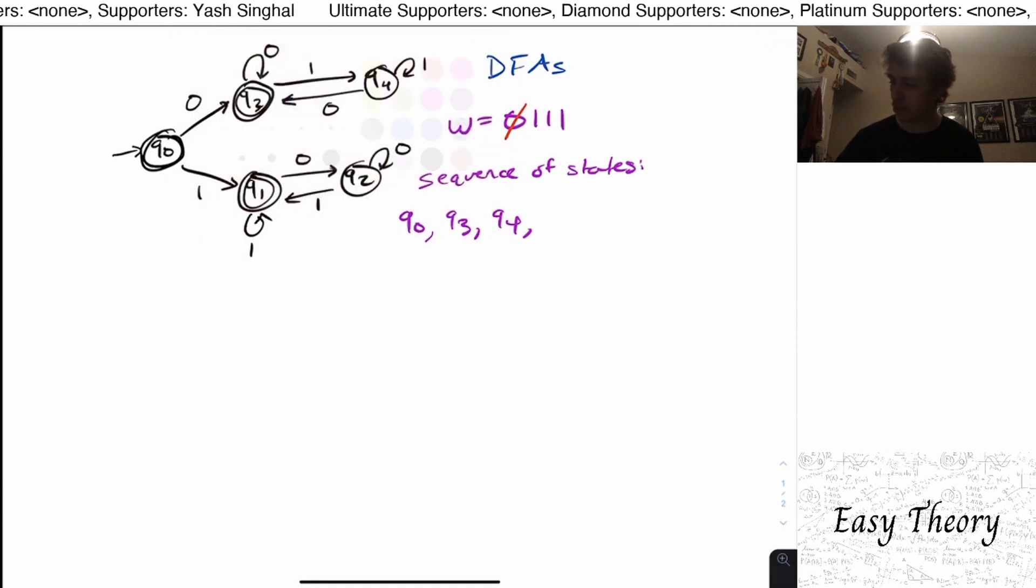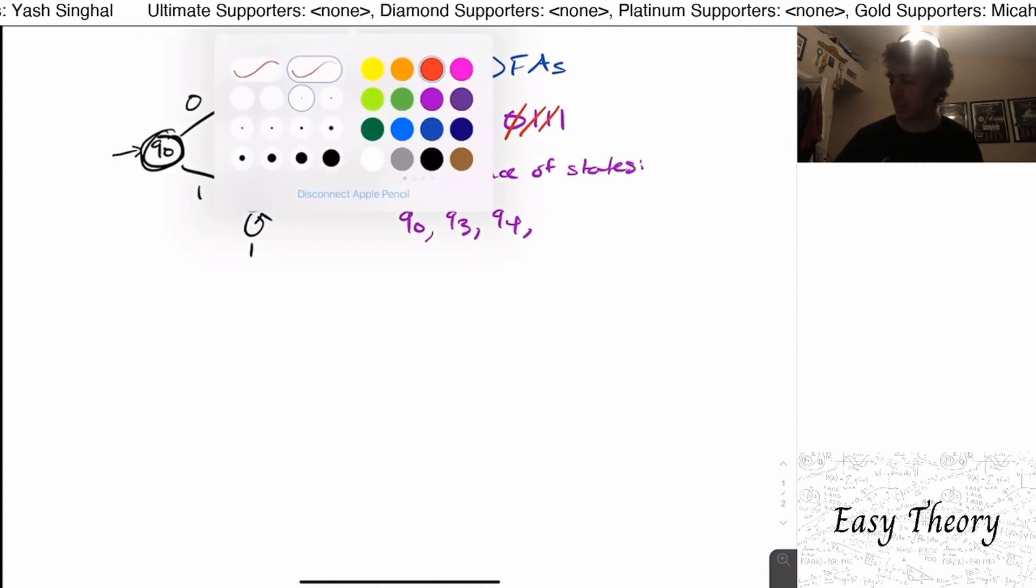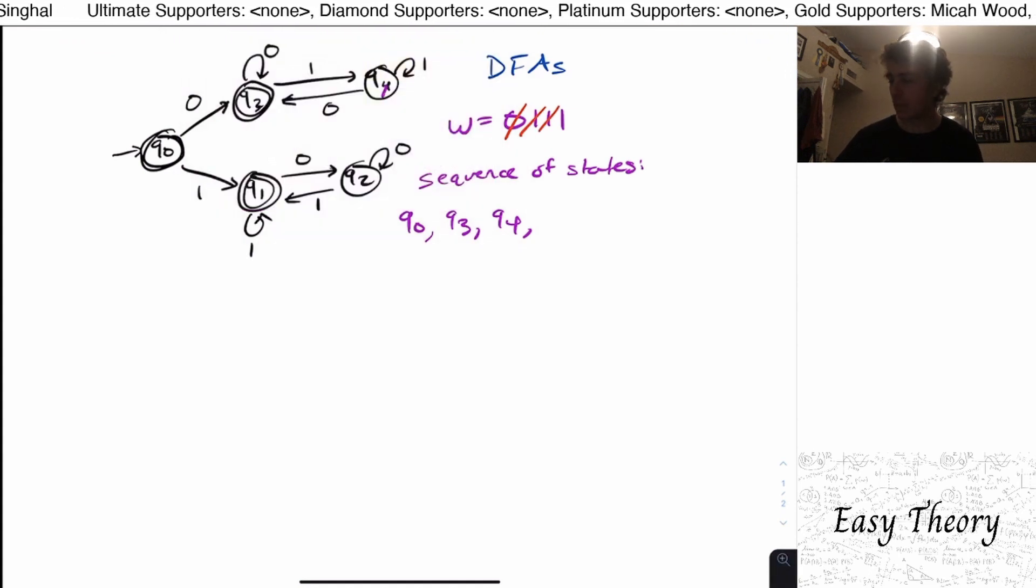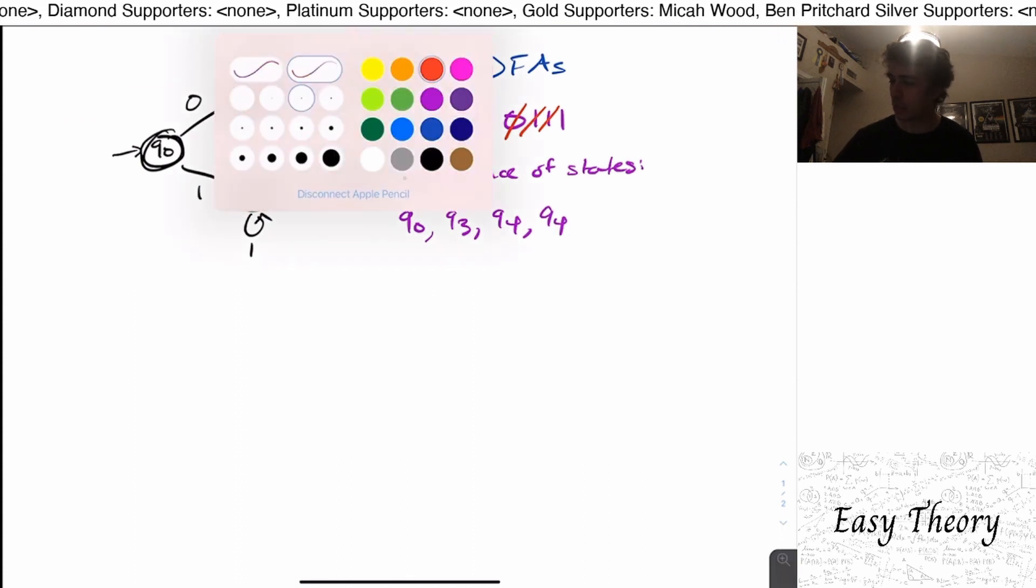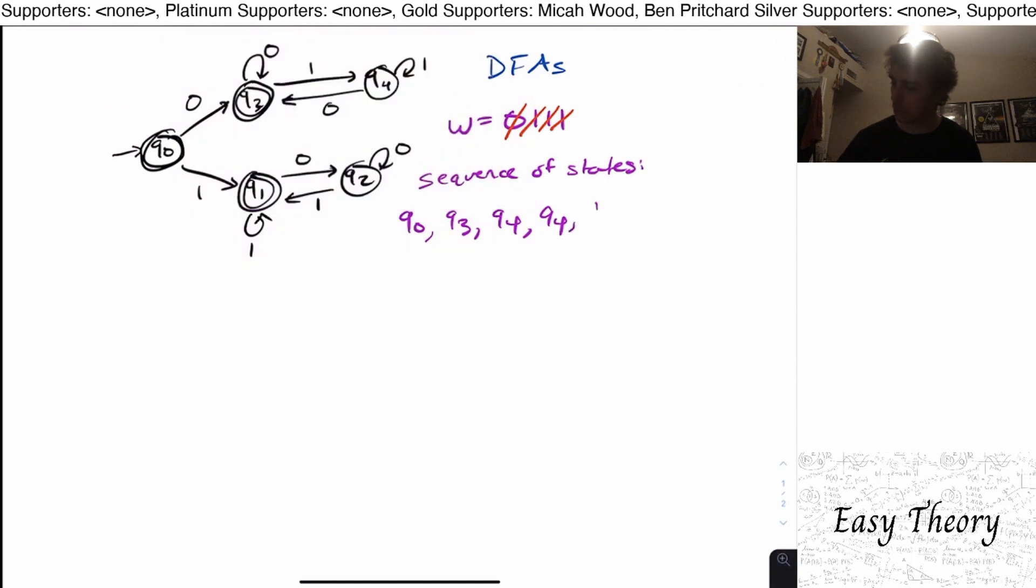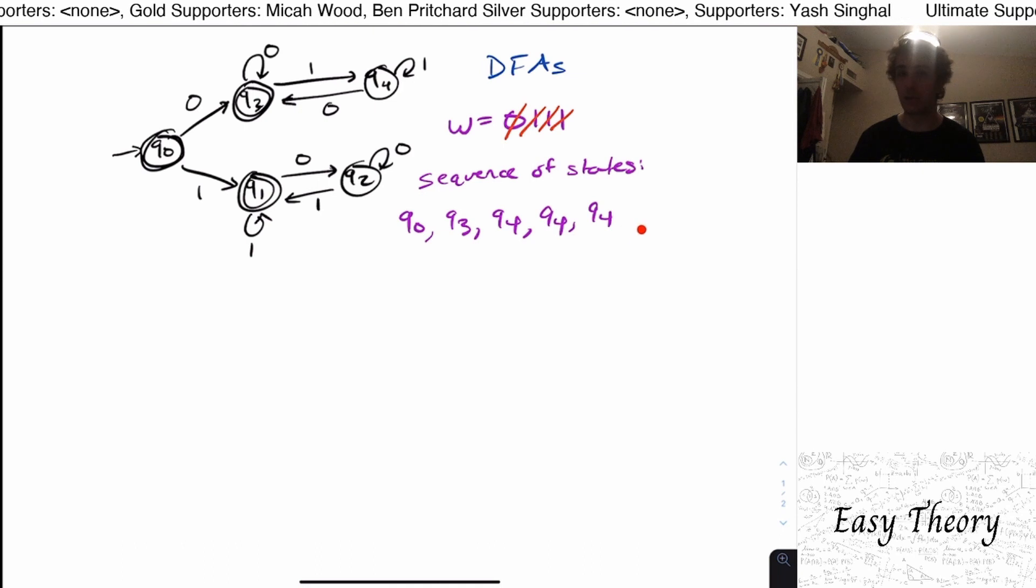And then now we have consumed the one, the first one, then we read another one, which means that we're going to stay in q4. Because if you look, q4 has a self loop on one right here. So we stay in q4. And when we consume the one again, we're still going to be in q4. So the sequence of states that we visit on this particular string is q0, q3, and then q4 three times.